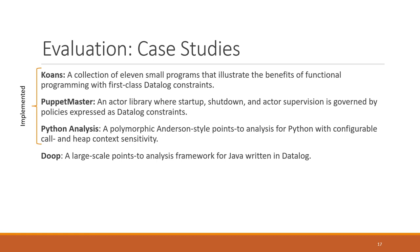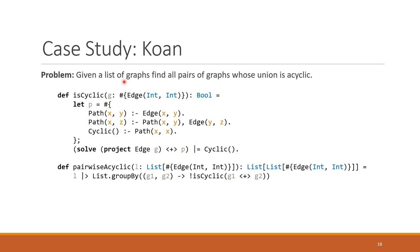So I'll just briefly show one of these koans. In this koan here, we are given a list of graphs, and we want to find graphs whose union is acyclic. And so the idea is that we can define a function is cyclic here using a small Datalog fragment. This Datalog fragment computes the transitive closure of the graph, and then it says that it's cyclic if there is a path from a node to itself. So this is expressed in Datalog. And then down here, we're given a list of graphs. Then we use group by on lists. So given two graphs, we compose them and we ask if it's not acyclic.